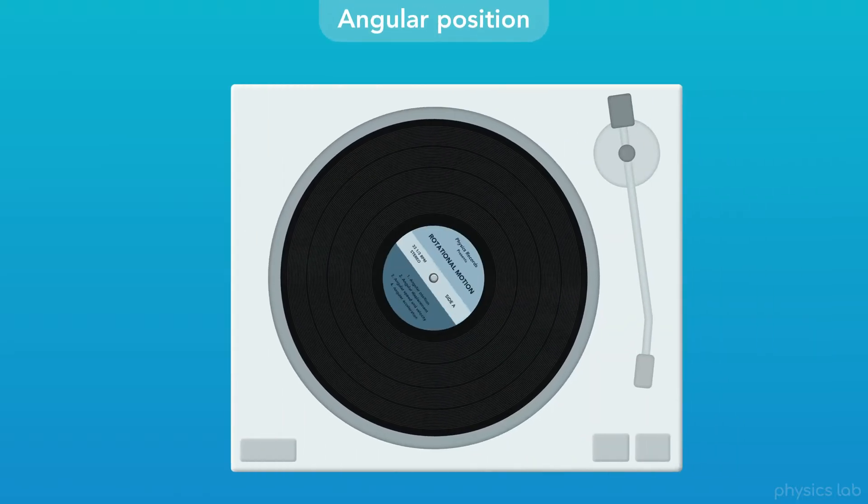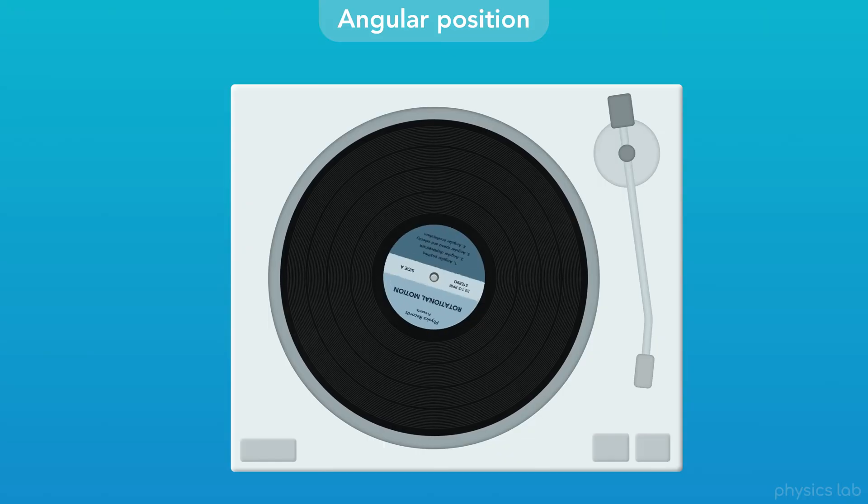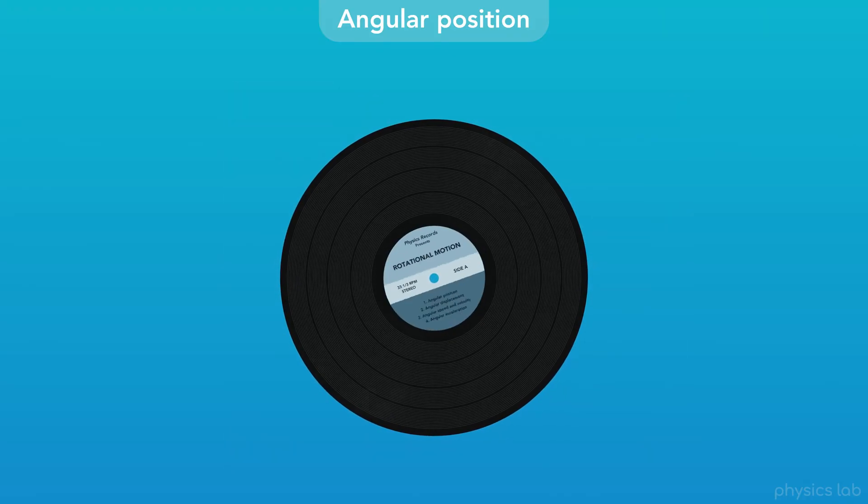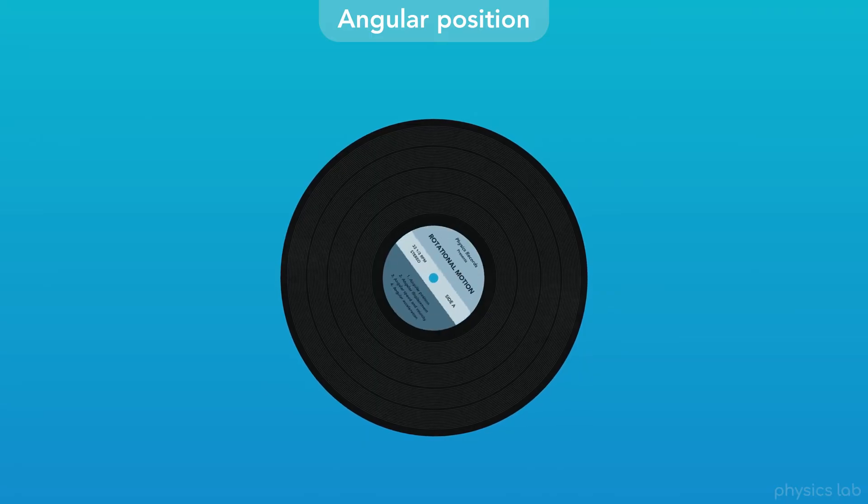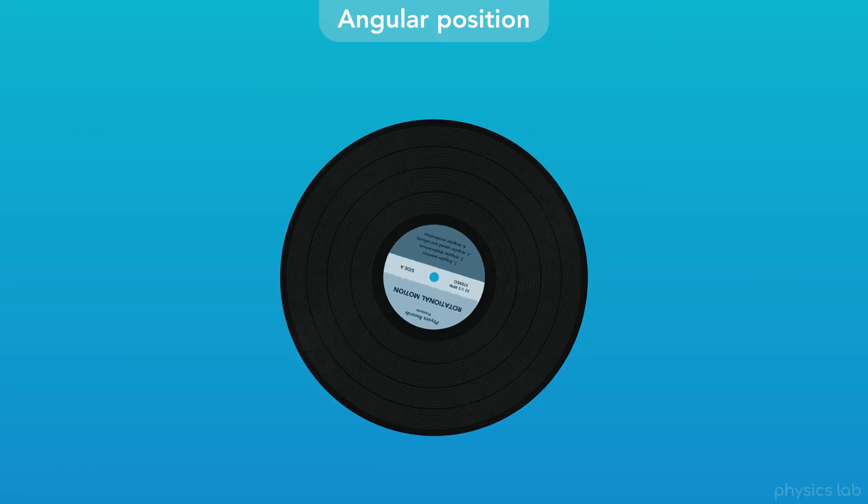We're going to use a vinyl record as our example for rotational motion in this video. How are we going to describe the position of this record over time? This might seem like a weird question, because the record seems to be staying in one position.